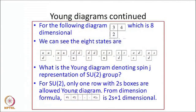Coming to the slides. For SU(2), only one row with 2S boxes is allowed in the Young diagram. From the dimension formula you can show that this gives 2S plus 1. The 2S could be an even or odd integer — S could be a half-odd integer also. So 2S is not necessarily an even integer; it gives an odd number if S is half-integer.